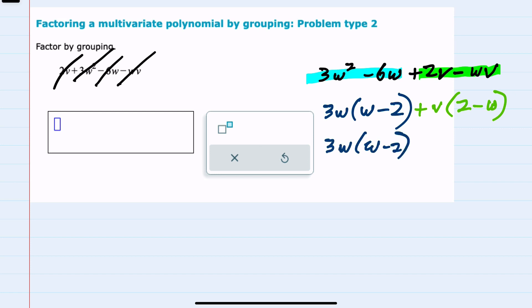And so from here, I should recall that I can change the order by factoring out a negative so that that v outside becomes a negative v.